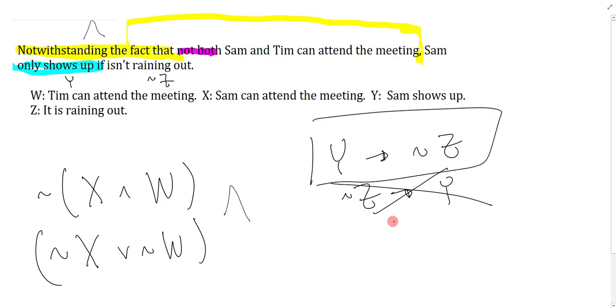It's really helpful to sort of say it out loud to yourself. So the full answer is one of these two and Y arrow not Z, but of course I would need to put this in brackets to make it so that the and is still the main connective of the sentence.